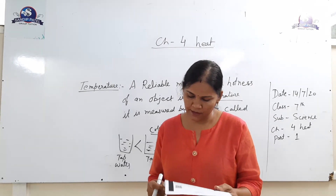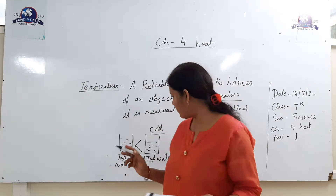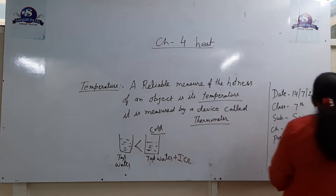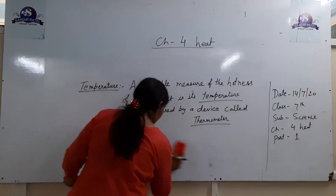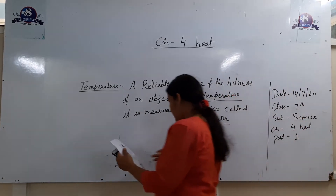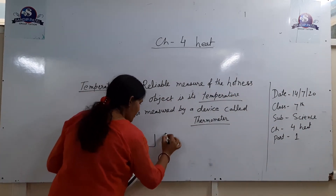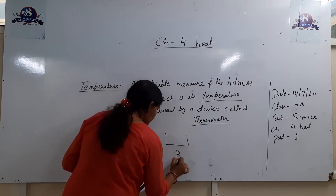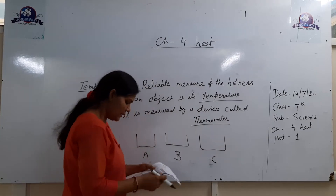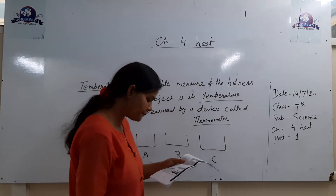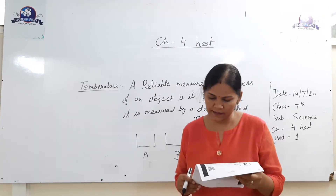Take three small tubs. We can take three containers. Label them A, B, and C.